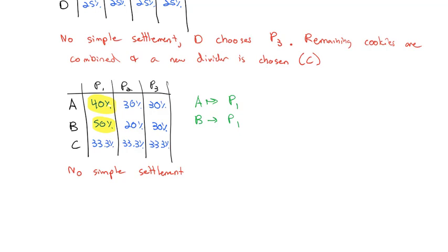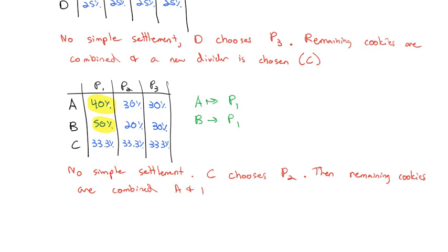Again there is no simple settlement, because no pile is wanted by only one person. So divider C will choose one of the uncontested pieces — pile two or pile three. Let's say C chooses pile two. The remaining cookies are combined, and because now there are only two players left, A and B can use a simple divider-chooser method. A splits the cookies into two piles, B picks the pile B wants, and A gets the remaining pile. At the end, everyone has at least a fair share of cookies.